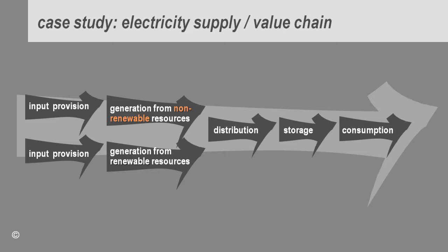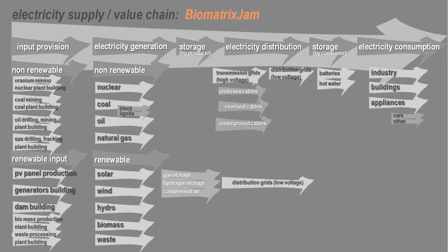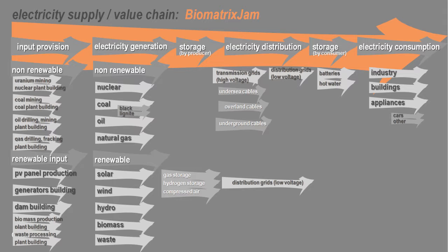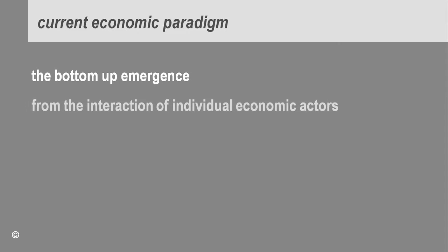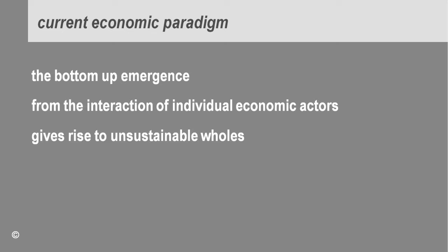Or we can dig increasingly deeper into the sub-systems and sub-industries, as this particular figure shows. This detailed figure also illustrates our current economic paradigm, which is a bottom-up one. Our economic theories are based on the collective belief that the sum total of efficient decisions made by individual economic actors or organizations in the various sub-industries will add up to a desirable whole that benefits all stakeholders.